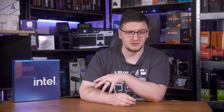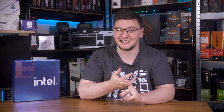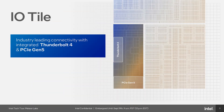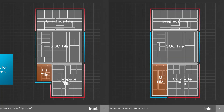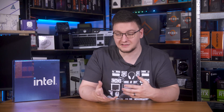If the SOC tile runs all of that IO, including both the memory controller and things like USB and Ethernet, what does the IO tile do? In short: PCIe and Thunderbolt 4. They actually showed two different size variants for the IO die for differing SKUs, so we'll need to keep an eye on how many PCIe lanes the various chips actually support.